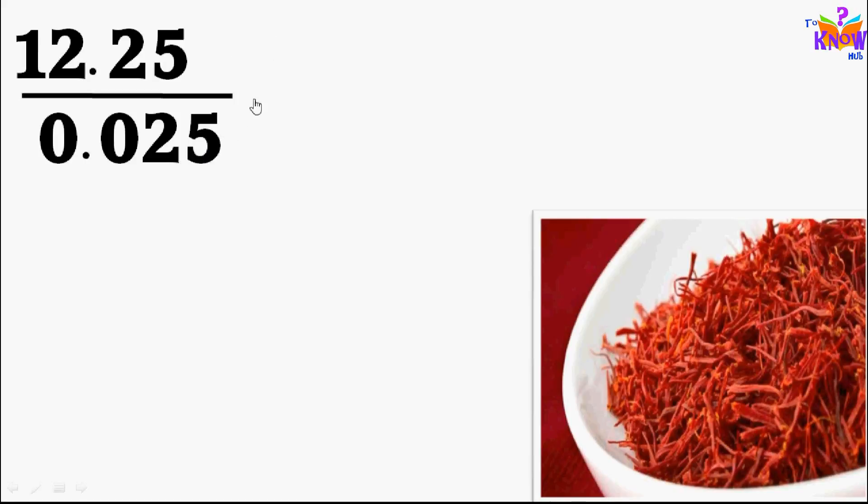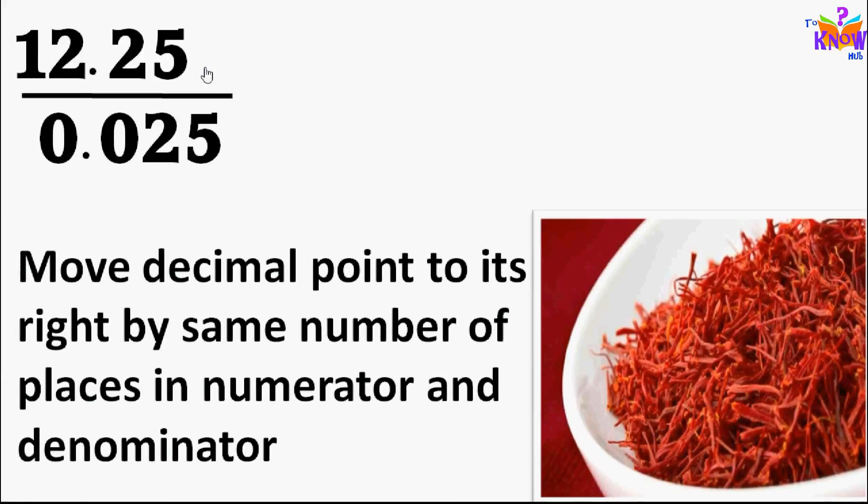We can multiply up and down by ten, hundred, or thousand to make the divisor whole number. Decimal point moves by same number of places in both numerator and denominator as we multiply both by same number.